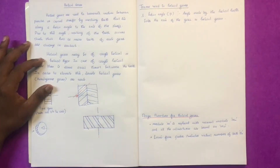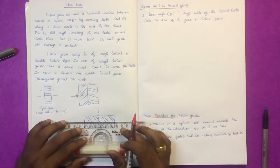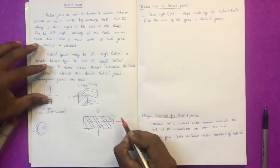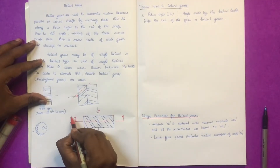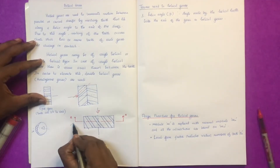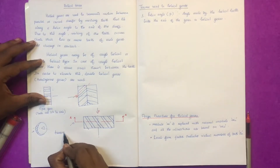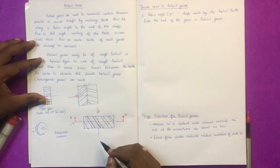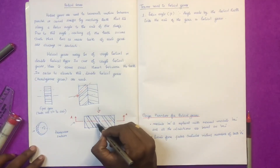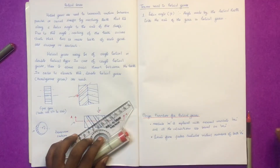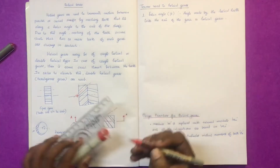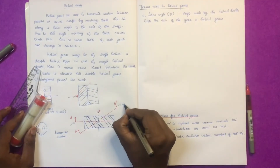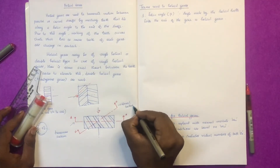We call this the transverse cross-section. One cross-section is perpendicular to the axis of rotation — that is the transverse section. We also identify a normal section, where the tooth profile is perpendicular to the tooth surface. The tooth in the normal section is called the normal section.